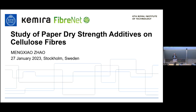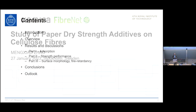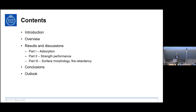The title of my PhD thesis is 'Study of Paper Dry Strength Additives on Model Cellulose Surface,' and my name is Meng Xiao. In the following 13 minutes I'm going to guide you through the contents of my thesis, from introduction and overview to results and discussions.